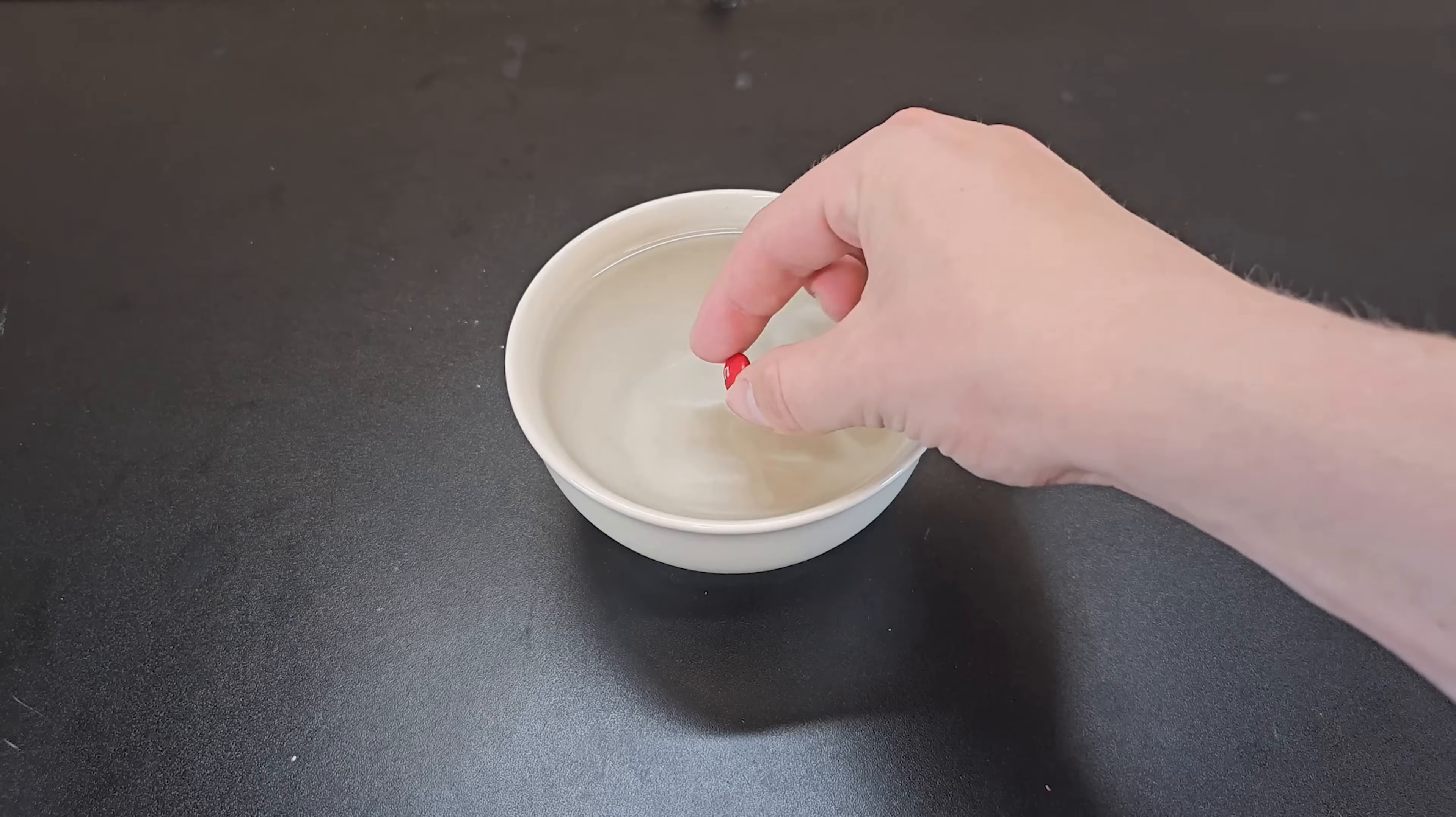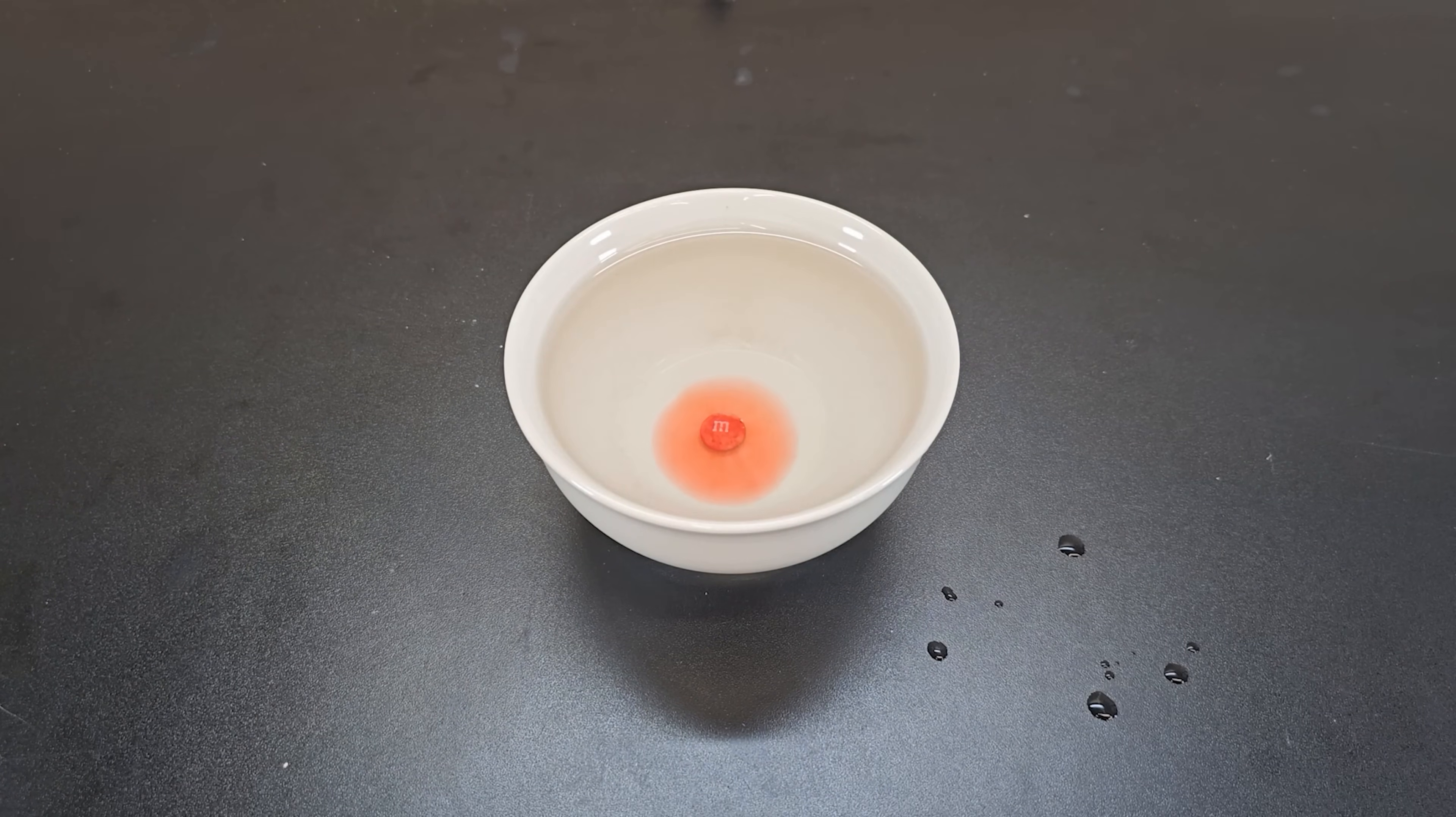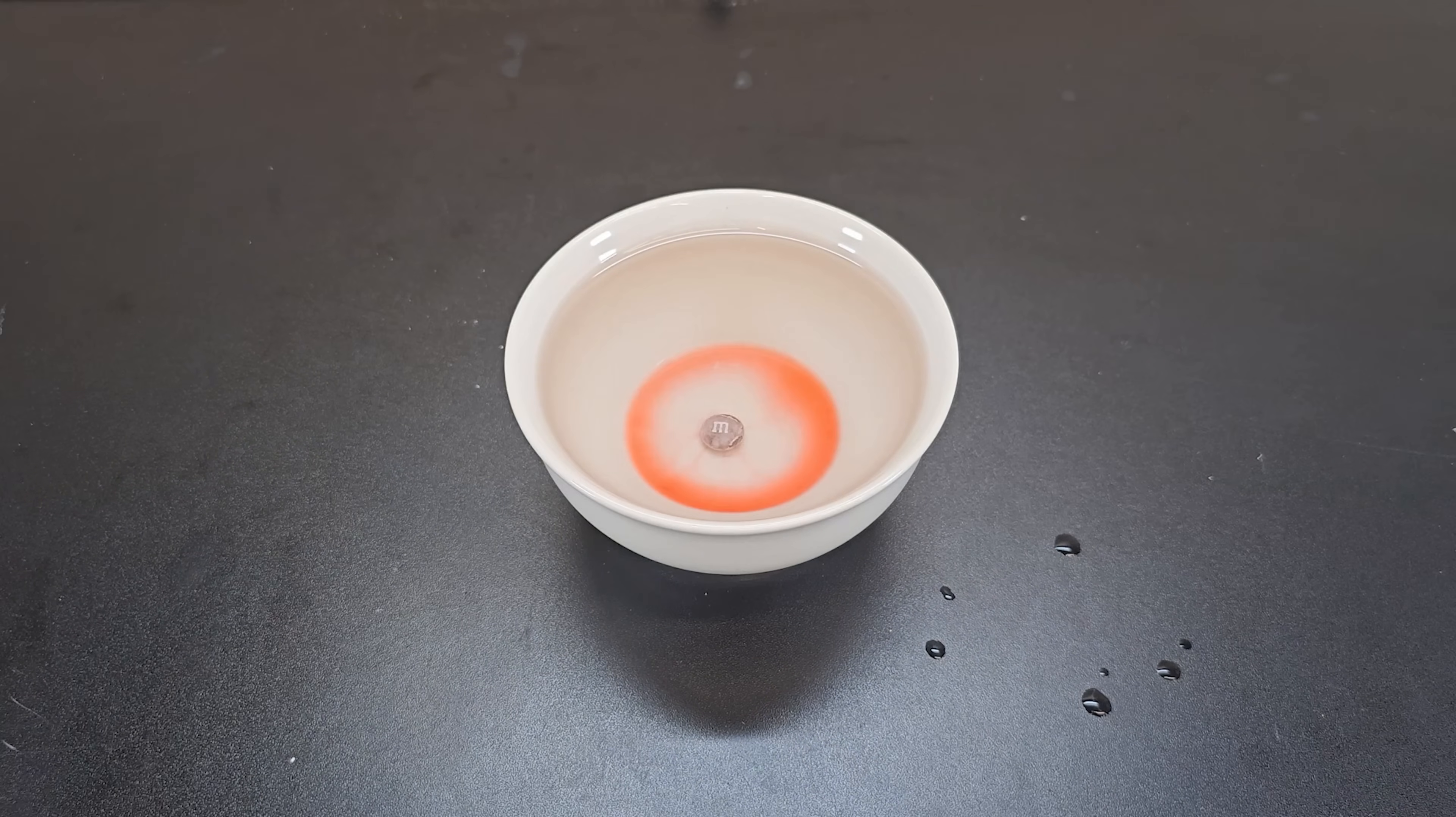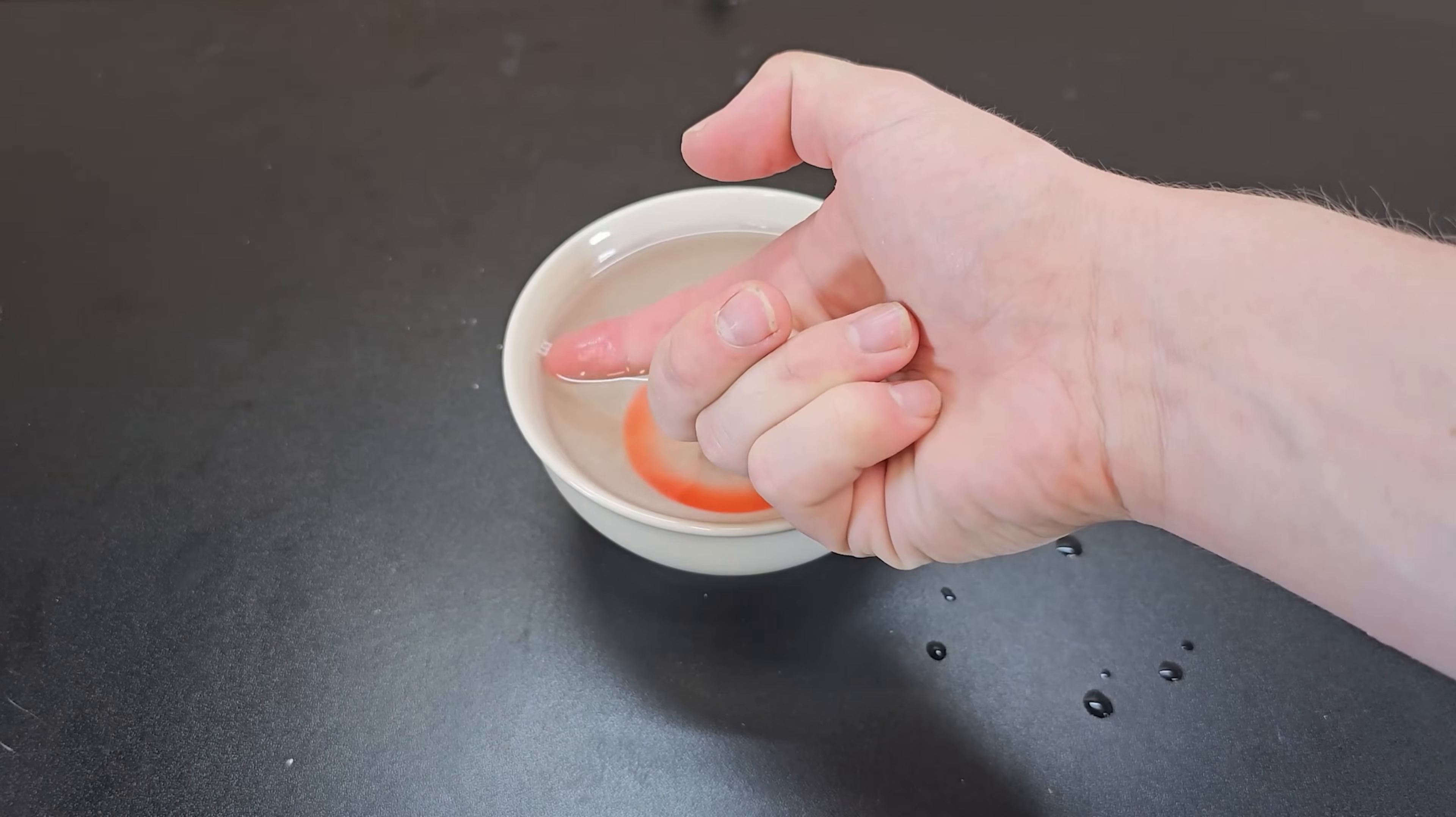If you take an M&M and place it in a bowl of water and wait a few minutes, the food coloring starts to dissolve and the letter M will detach and float to the surface and you can carefully pick it up.